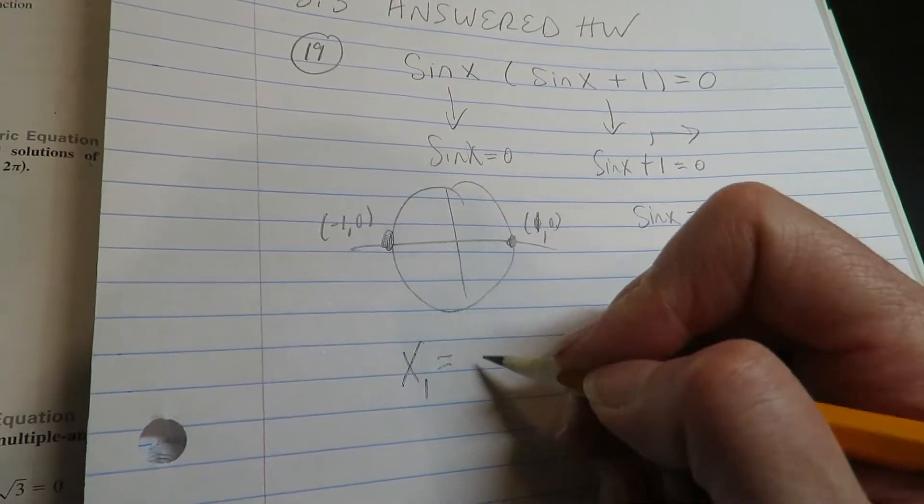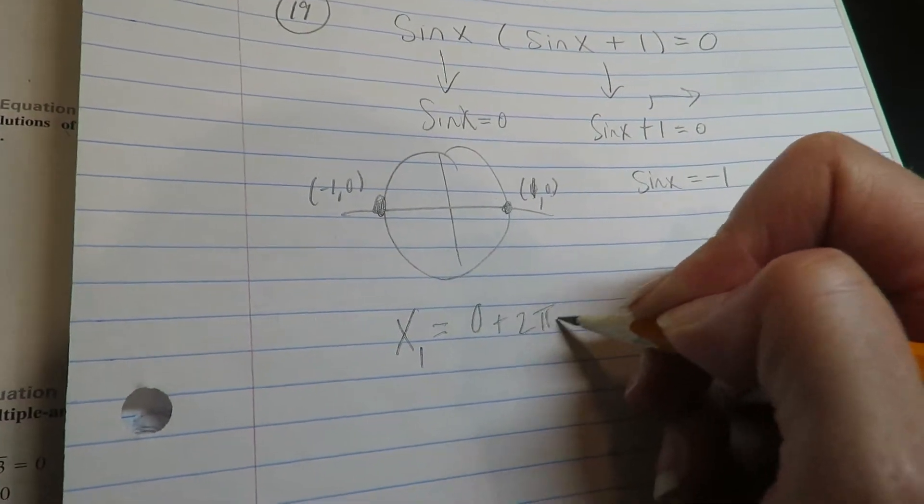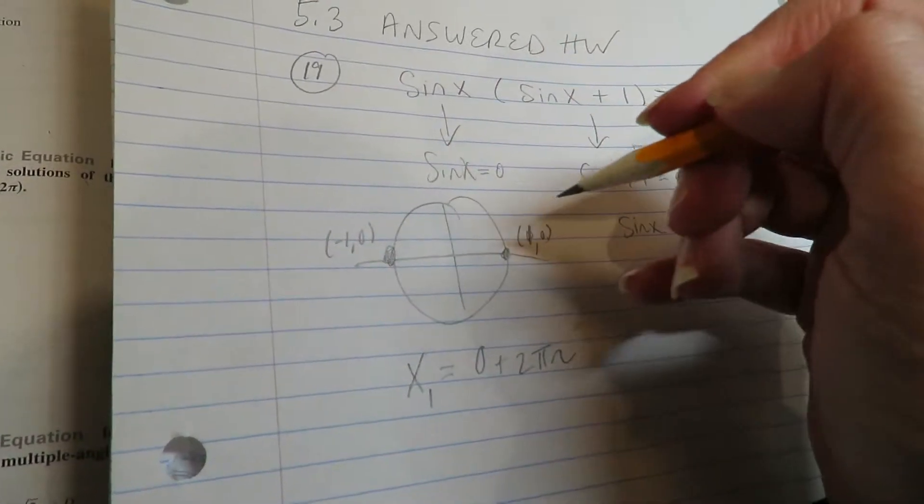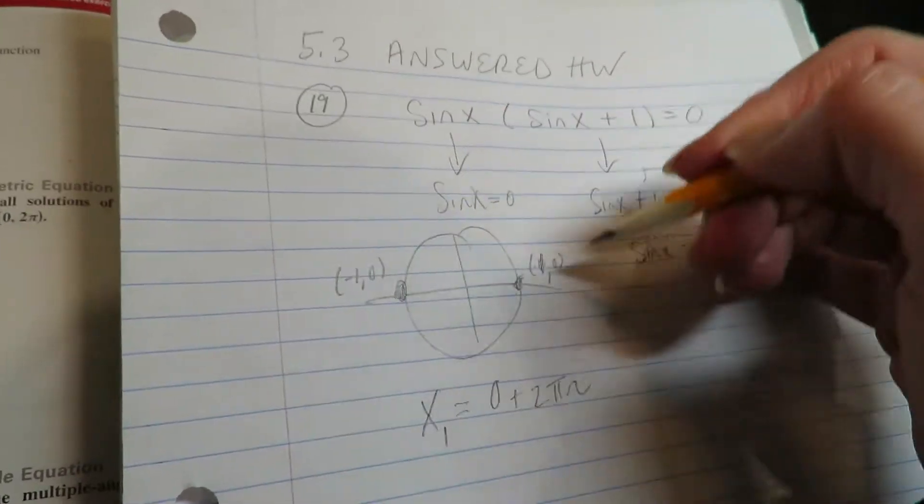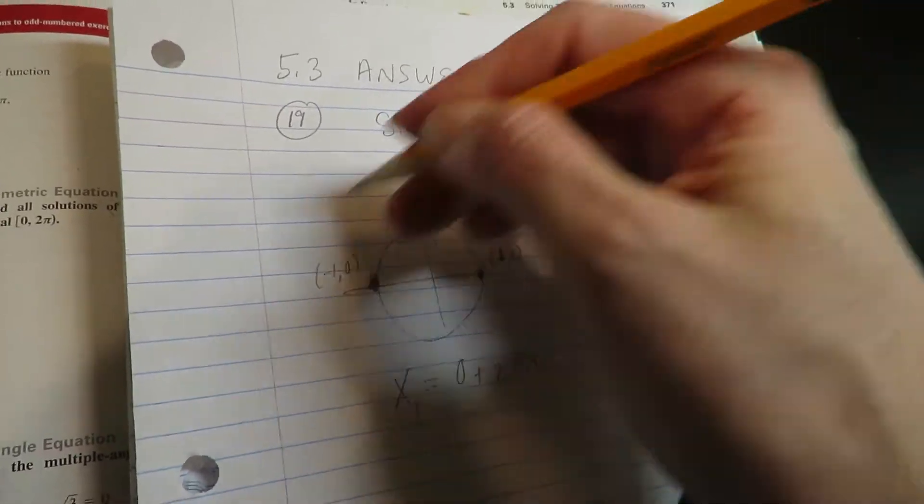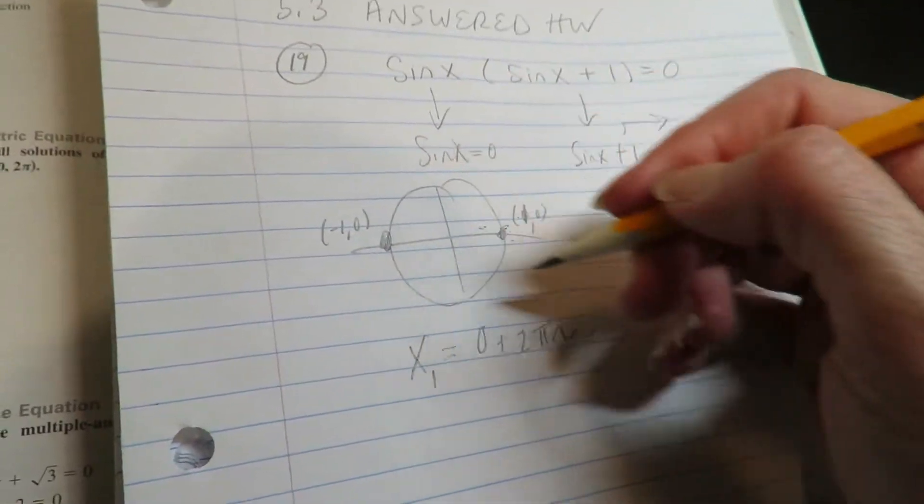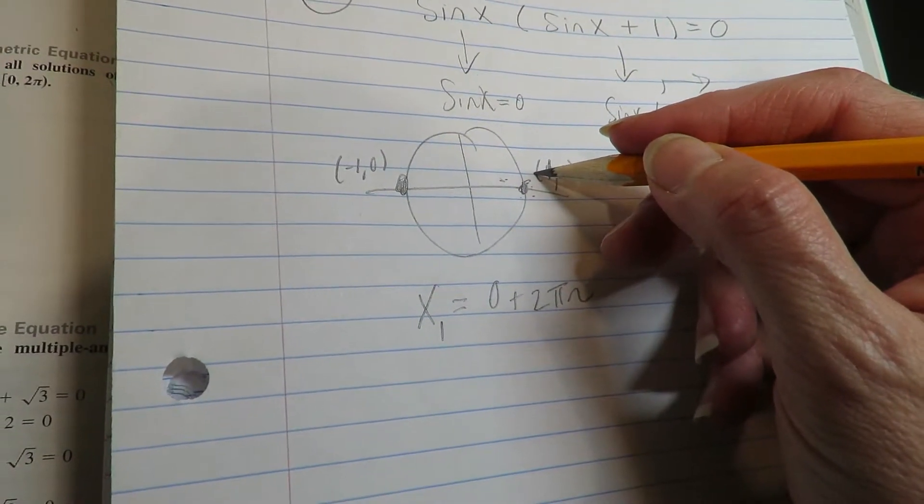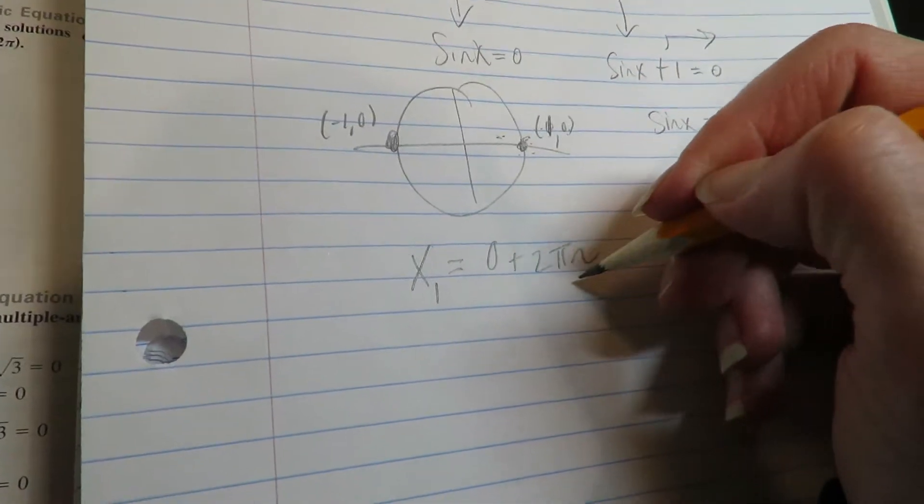zero, an angle of zero plus two pi n, which would be zero, two pi, four pi, six pi, eight pi, ten pi, twelve pi, fourteen pi. Every time you come back around here, there's an answer.